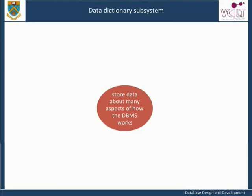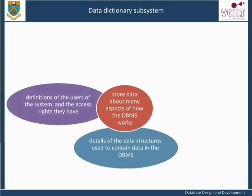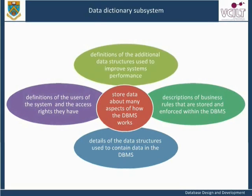The data contained in the dictionary subsystem varies from DBMS to DBMS, but in all systems it is a key component of the database. Typical data contained in the dictionary includes: definitions of the users of the system and the access rights they have; details of the data structures used to contain data in the DBMS; descriptions of business rules that are stored and enforced within the DBMS; and definitions of the additional data structures used to improve systems performance. It is important to understand that, because of the importance and sensitive nature of the data contained in the dictionary subsystem, most users will have no or little direct access to this information.